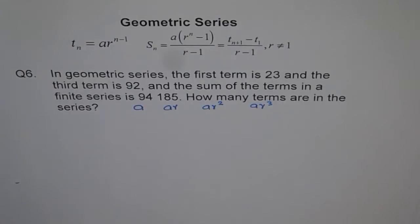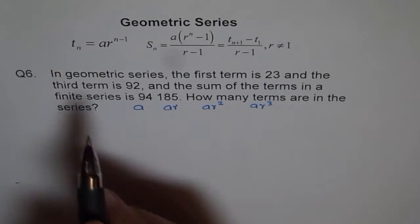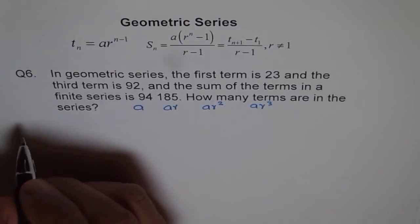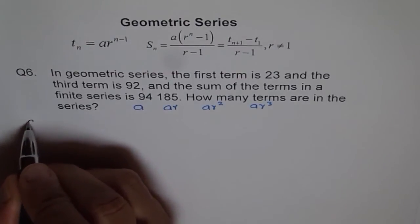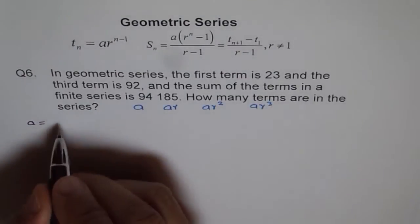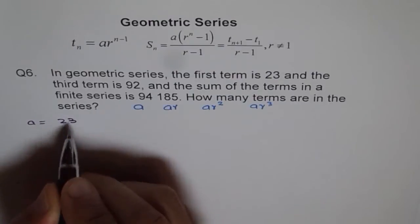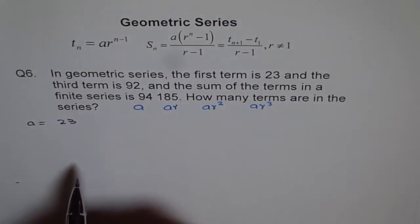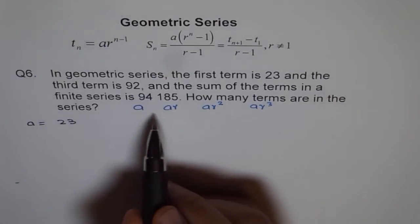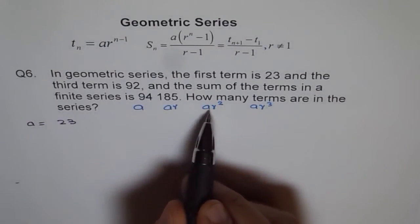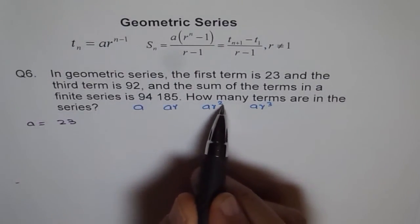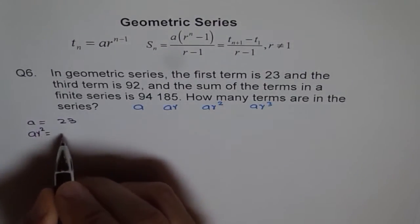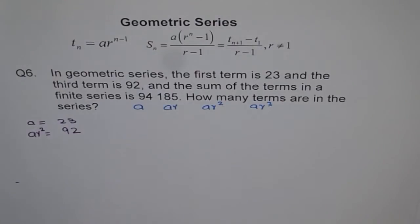We have the first term as 23, so a equals 23. The third term is 92. The third term is a·r squared, so we can write a·r² equals 92.